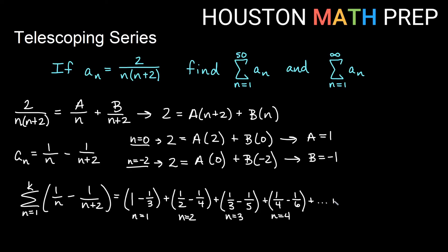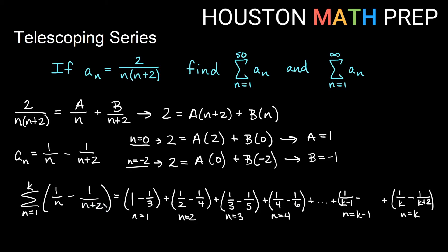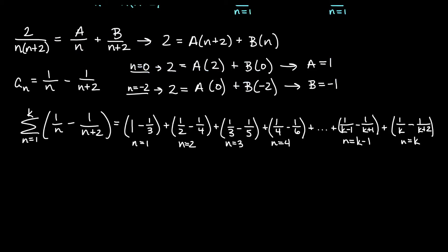We skip a bunch of terms. The kth term (n equals k) is 1 over k minus 1 over k plus 2 — that's our last term. The k minus 1 term, right before the end, is 1 over k minus 1 minus 1 over k minus 1 plus 2, which is 1 over k minus 1 minus 1 over k plus 1. That is our expansion so we can look at the cancellations.